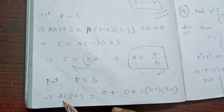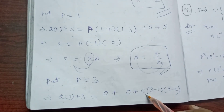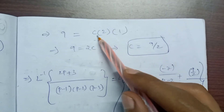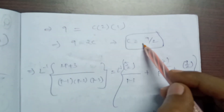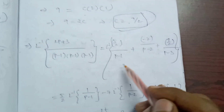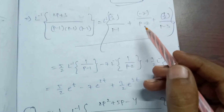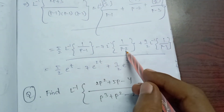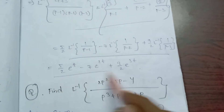Put p equal to 3. Then 2 times 3 plus 3 is equal to 9, and that equals C times (3 minus 1)(3 minus 2) equals 2C. So C equals 9/2. Substituting back, the inverse Laplace transform gives us terms with e^t, e^(2t), and e^(3t).